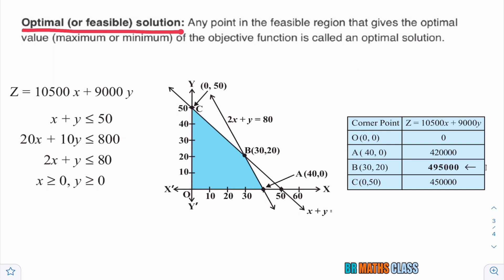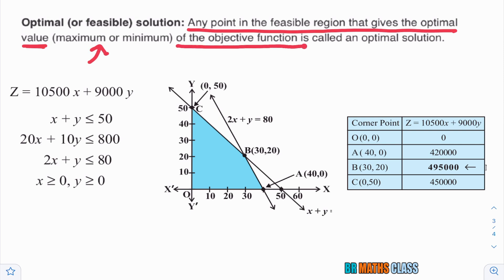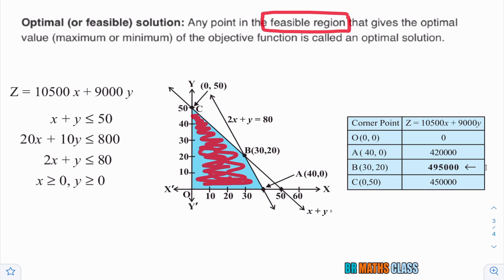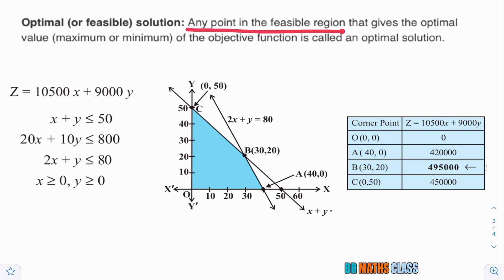What is the definition of optimal solution? This optimal solution is also known as feasible solution. Any point in the feasible region that gives the optimal value — optimal value means whether it is the maximum value or minimum value of the objective function — is called optimal solution. We already learned what is feasible region: the common region obtained by the given constraints.